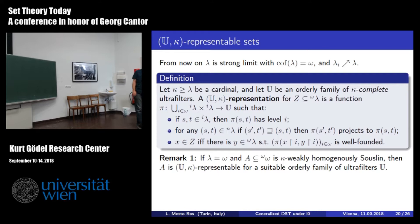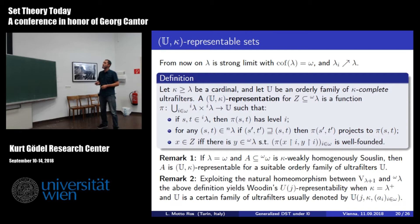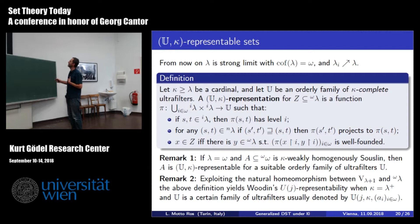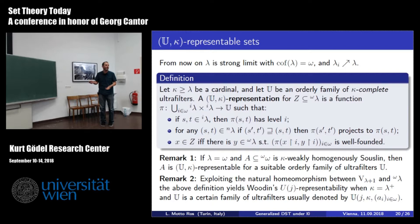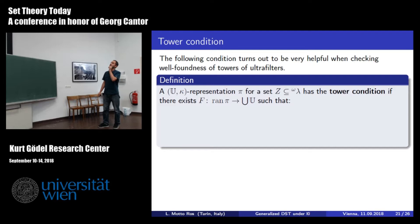If you take lambda equal to omega, this is very close in spirit to weakly homogeneous Suslin—it follows from it. Weakly homogeneous Suslin sets are UK-representable sets for a more specified family of ultrafilters; here I'm more generous. In Woodin's context, UJ-representability is essentially the same thing, except that kappa must be lambda-plus, and the family of ultrafilters is a very specific one related to the embedding j and other parameters.